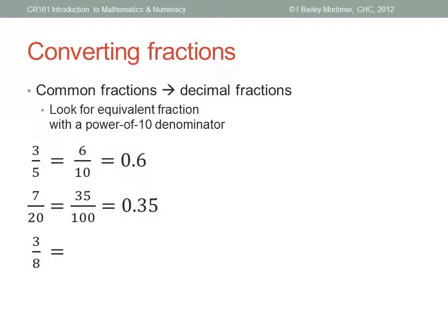Three-eighths. Hmm, ten won't work. Eight doesn't go into ten. A hundred won't work. Eight doesn't divide a hundred either. I have to go all the way to a thousand. You may want a calculator here. Eight goes into a thousand one hundred and twenty-five times. So I have three times a hundred and twenty-five, which is three hundred and seventy-five. Zero point three-seven five.